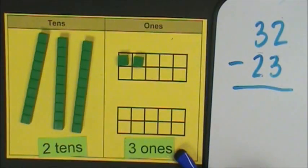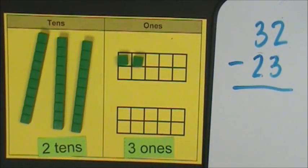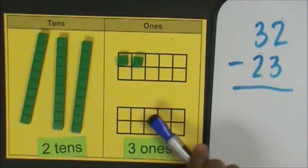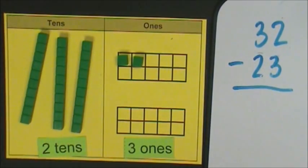Two ones minus three ones. I can't do that. There are not enough ones. I need three ones, they are not there.